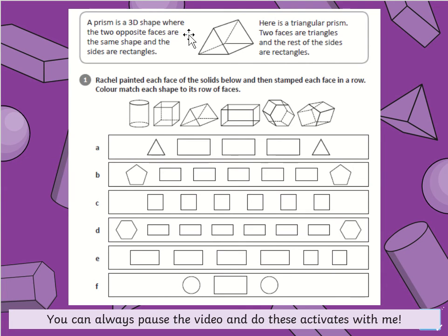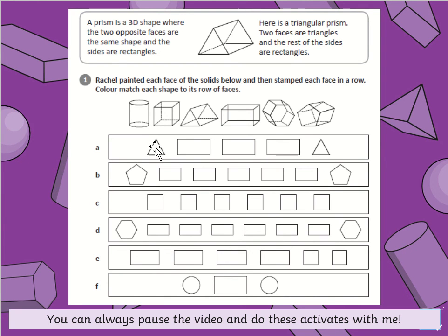A prism is a 3D shape where the two opposite faces are the same shape and the sides are rectangles. Here is a triangular prism — two faces are triangles and the rest of the sides are rectangles. Rachel painted each face of the solids below and stamped each face in a row; colour match each shape to its row of faces. So you need to figure out which shape matches which set of faces. This one has rectangles and triangles — two triangle sides. I think this is definitely a triangular prism because it's got the triangles.